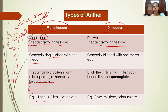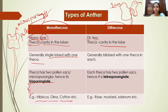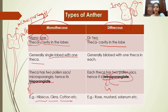Dithecal anther has two lobes, and inside each lobe there is one cavity. Inside each lobe there are two microsporangia — so the first lobe has two microsporangia and the second lobe also has two microsporangia. Thus, inside a dithecal anther there are a total of four microsporangia or pollen sacs present. Hence dithecal anthers are called tetrasporangiate anthers — 'tetra' meaning four.